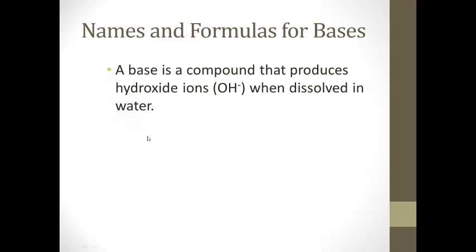Next, names and formulas for bases. A base is kind of like the opposite of an acid. A base is a compound that produces hydroxide ions, OH-, when dissolved in water. These are simply named just like any other ionic compounds. Generally, they're going to end in OH.